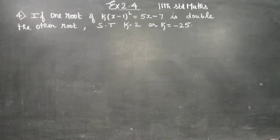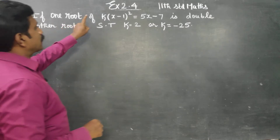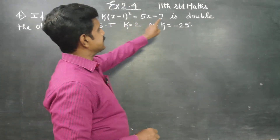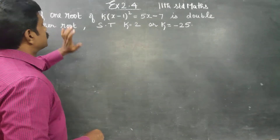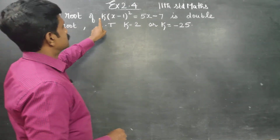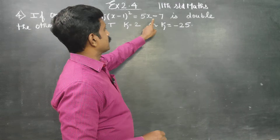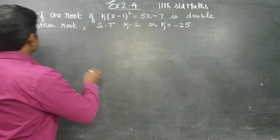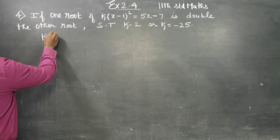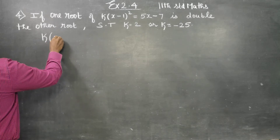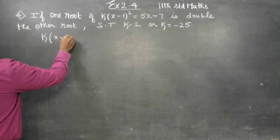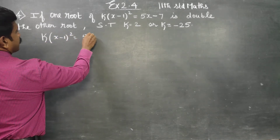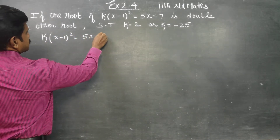Dear Levin Standard students, in exercise number 2.4, if one root is double of the other, this is my quadratic equation: k into x minus 1, whole square, is equal to 5x minus 7.